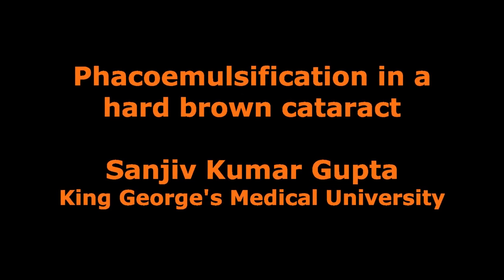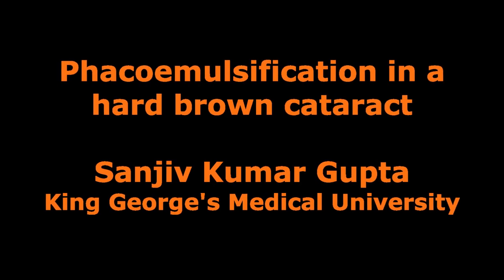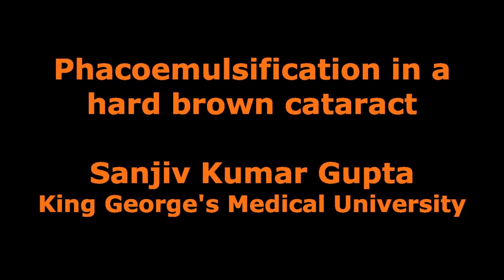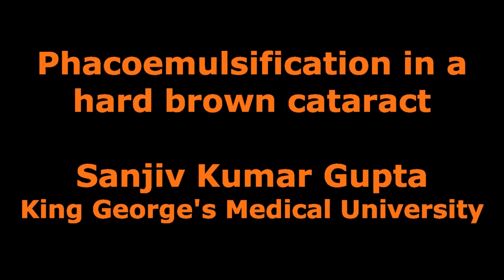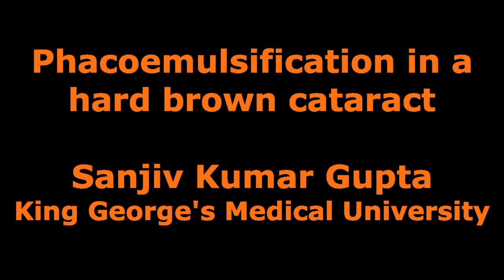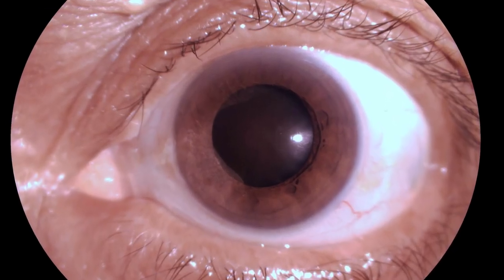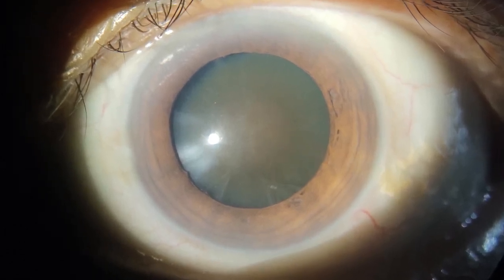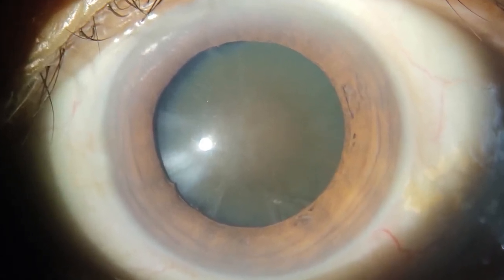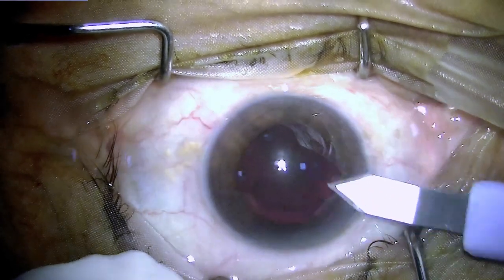The word cataract originally refers to a waterfall, and in Hindi we call it motyabin, which also refers to a particular color. The color is white, but in few individuals this cataract instead of getting white gets brown or rather black. Here we have an individual with a brown and dense cataract, which is different from routine cataracts that are white. We will see this surgery and the nuances associated with this kind of cataract.